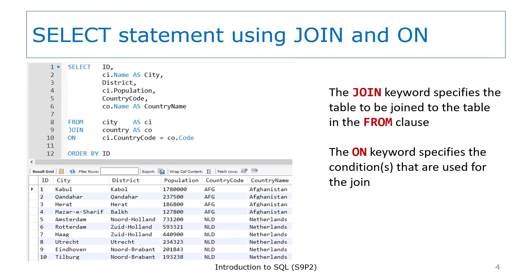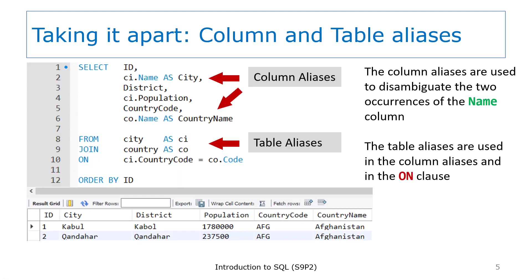So we have a select statement that joins the city and country tables based on the country code value in the city table and the code value in the country table. We've defined a column list to include all of the columns in the city table and the name value in the country table. We've table qualified the column names that are contained in both tables, and we've assigned column aliases to make it clear in the result set where the value is coming from. You can see how both of those column aliases show up in the result set.